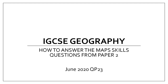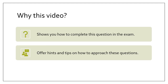In this video I'll be showing you how to answer paper 2 map skills questions from the June 2020 question paper 2-3 of the IGCSE Cambridge Geography exam. This video will show you how to complete these particular questions in the exam. It will offer hints and tips on how to approach these questions. My advice is, if you have the exam paper in front of you, follow along and complete at the same time, then have a go at doing another past question.